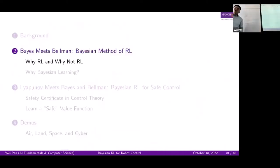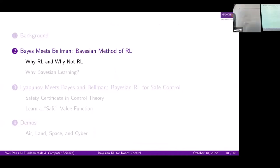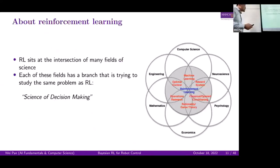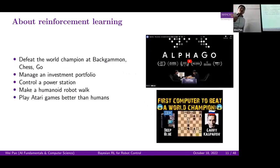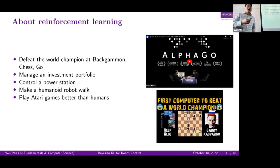When I talk about machine learning for robot control, I mainly talk about reinforcement learning. Reinforcement learning sits at the intersection of many fields of science, each trying to solve the same problem — the science of decision making. There is no supervisor, only a reward signal obtained by trial and error. Time really matters, so it's essentially a sequential decision making problem. RL has achieved very impressive performance in many tasks — for example, beating championships in Go.